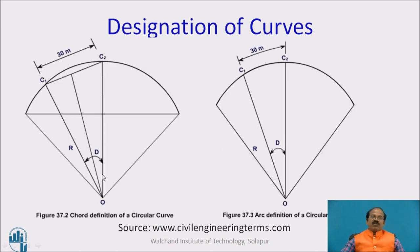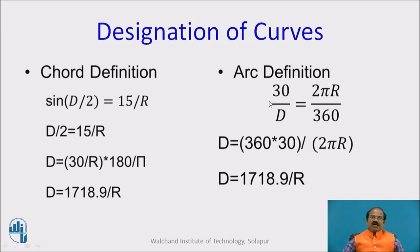As per the arc definition, which appears more precise because we are measuring the arc length, radius of curve R multiplied by angle subtended at the center D equals 30 meters. If this arc length is 30 meters making angle D at the center, the total perimeter of the circle 2πR makes angle 360 degrees. This relation gives us: 30/D equals 2πR/360, which yields D equals 1718.9 divided by R. It's very important to do conversion from radius designation system to the degree of curve designation system.